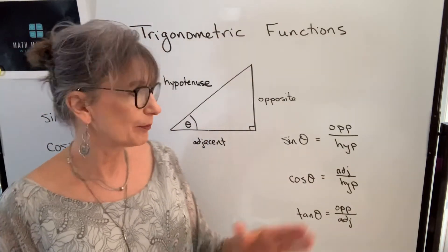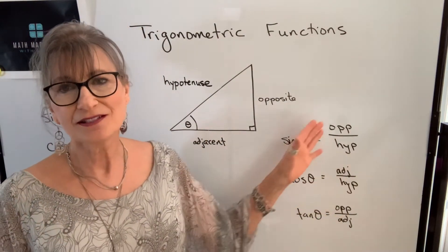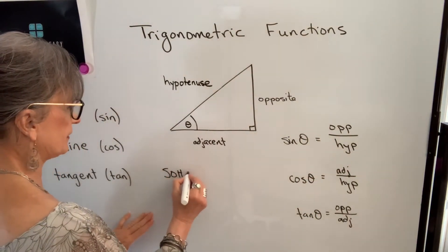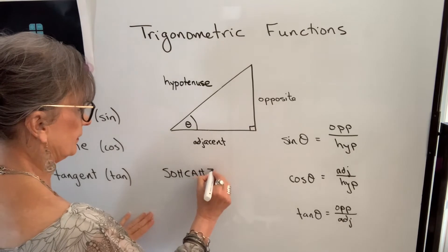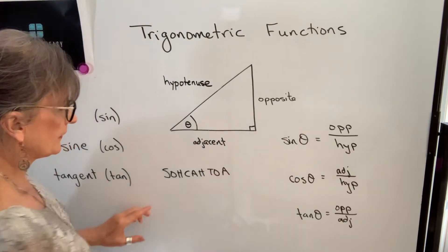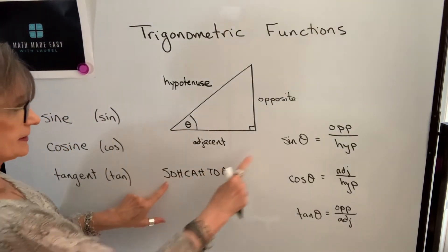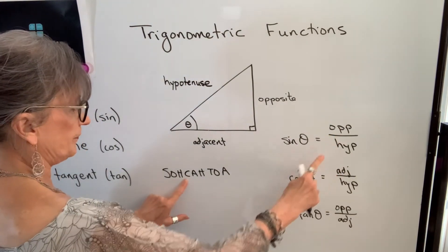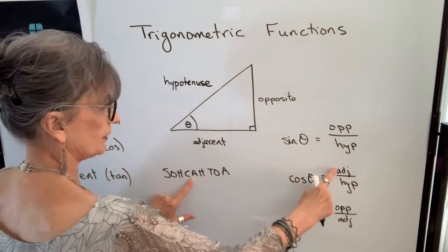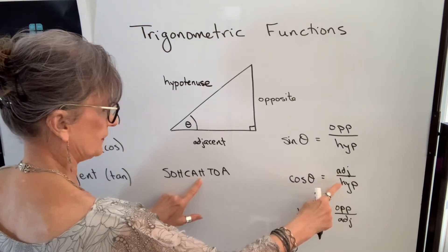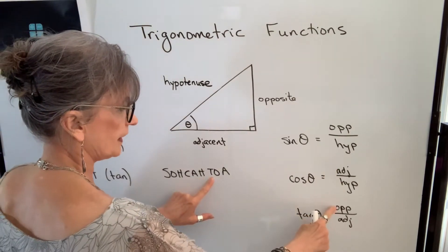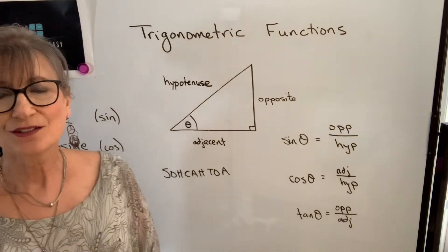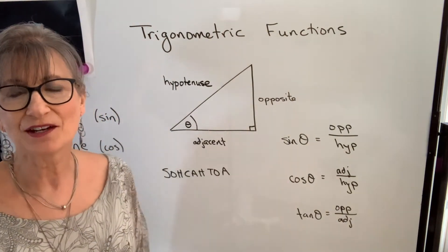One way that students often remember these definitions is with the mnemonic SOH CAH TOA. What that's saying is that sine is equivalent to opposite divided by hypotenuse; cosine is equivalent to the ratio of adjacent over hypotenuse; and tangent is equal to the side opposite divided by the adjacent side. So that might help you remember these definitions.